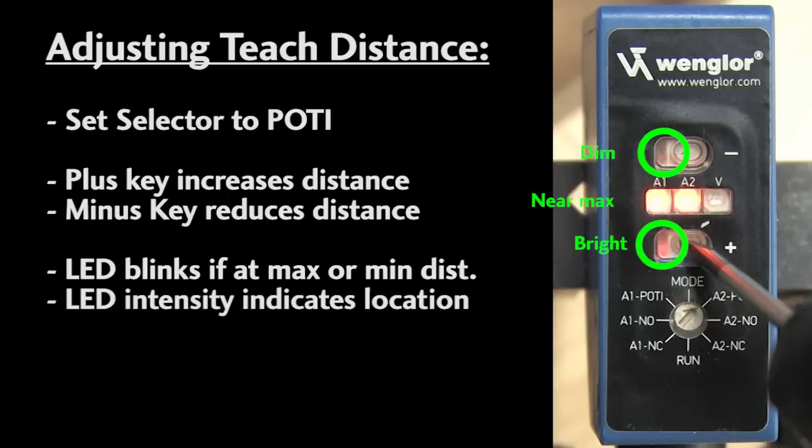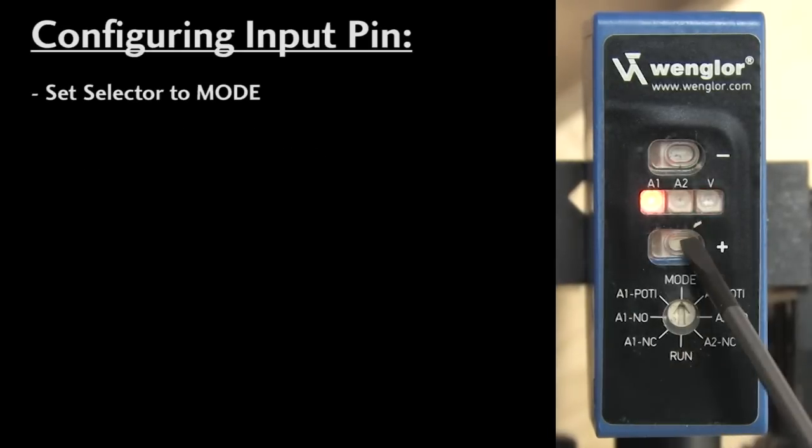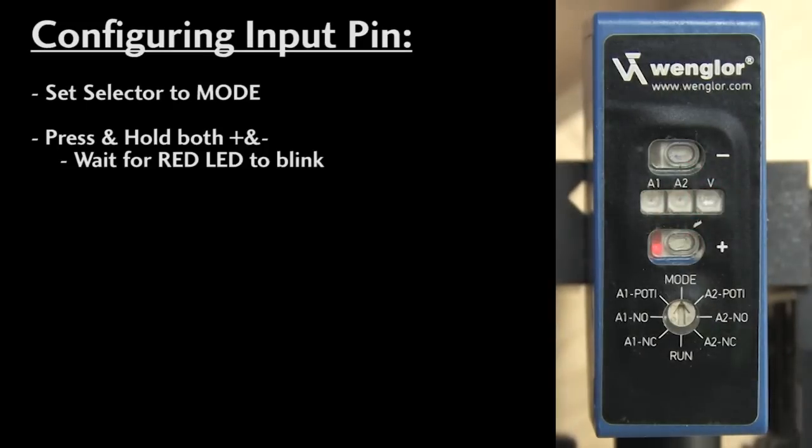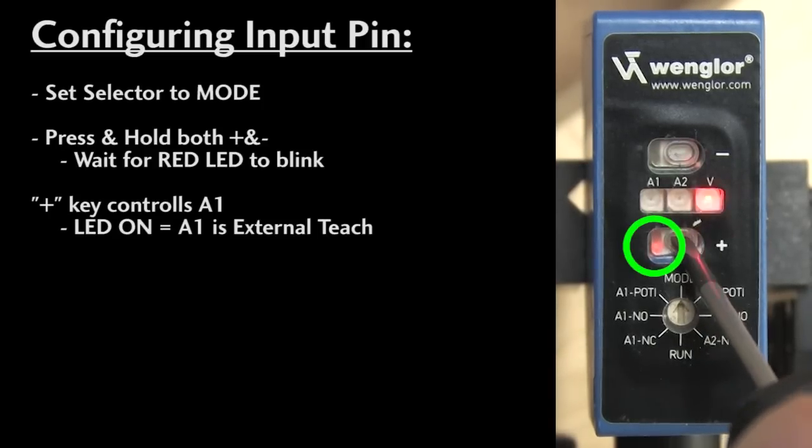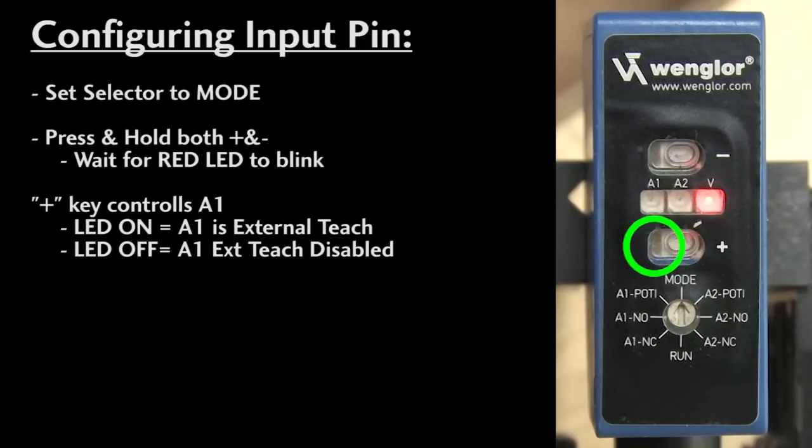To configure the input pin, set the selector to mode and press and hold both the plus and the minus keys until the red LED blinks – it will take about 5 seconds. The plus button controls A1. If the plus LED is lit, that says that the input pin will be used for external teach of pin A1. If the LED is off, the external teach is disabled for output pin A1.